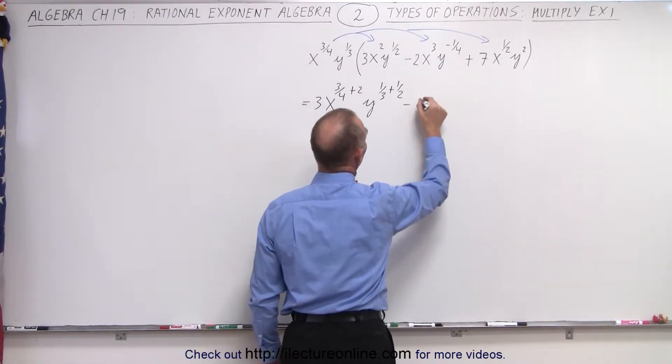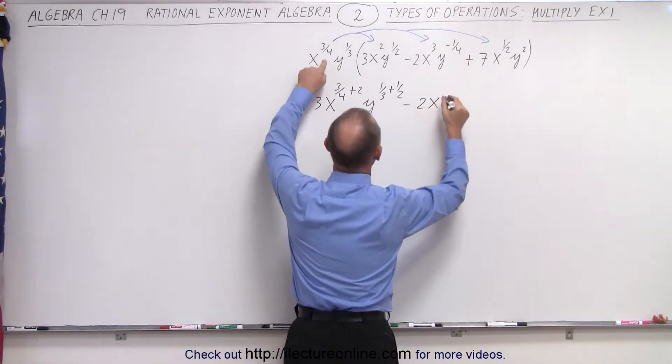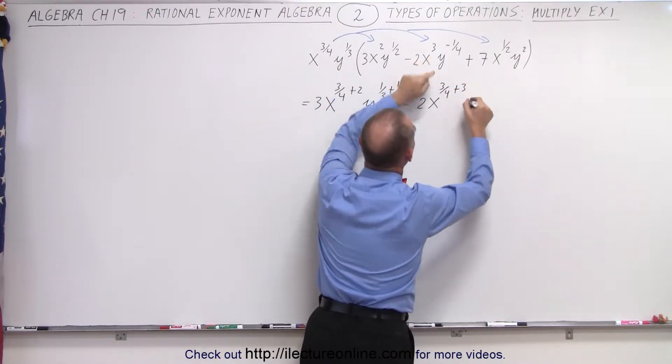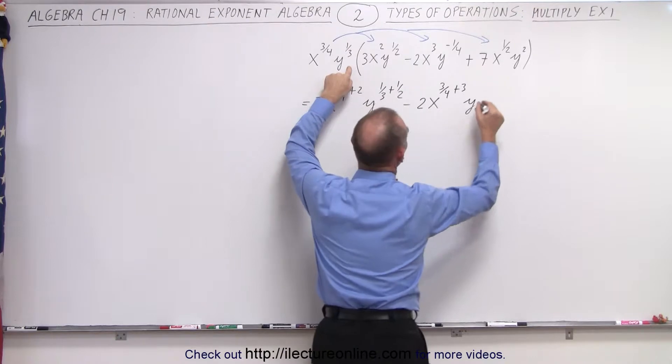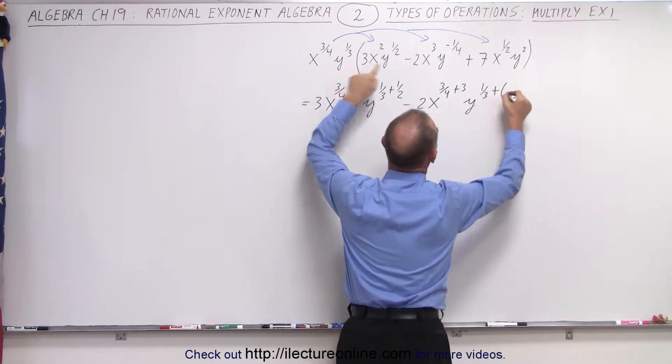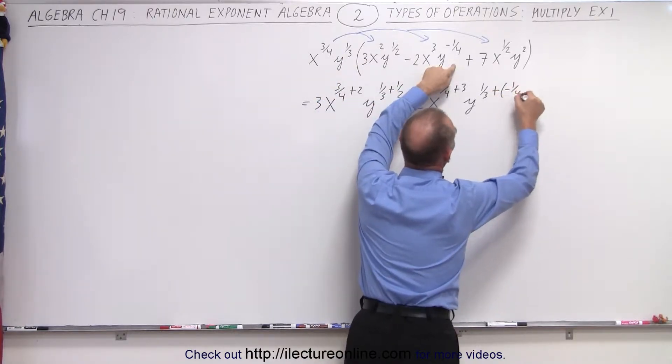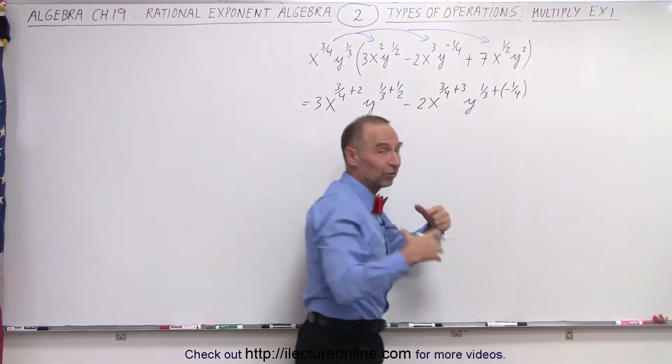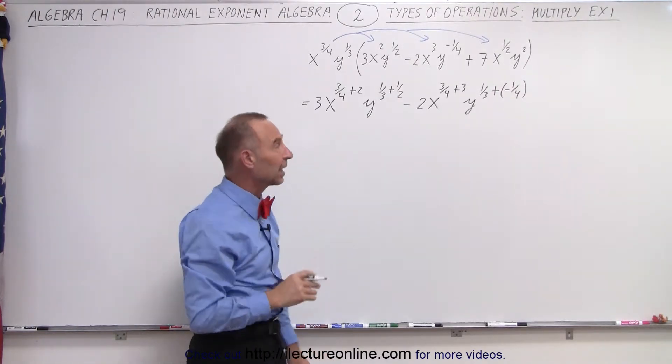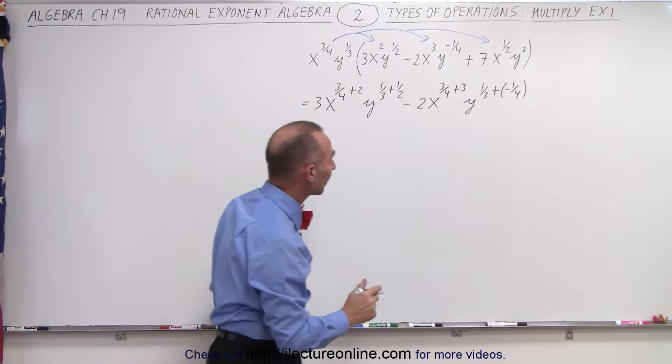And then the second term we get minus two x to the three quarters plus three and then we get y to the one third, oops, I said third but I wrote two, plus a minus quarter. And notice I wrote, since I'm summing exponents together, I put the plus there but realizing we're adding a negative exponent so it's not a bad idea to write it like that.